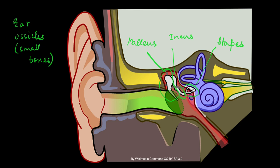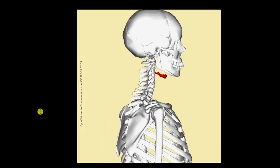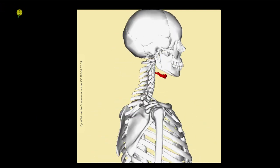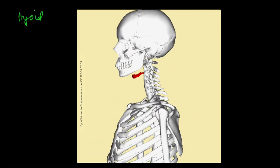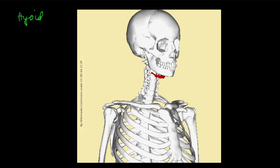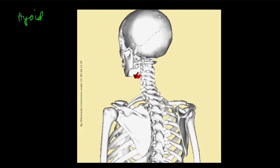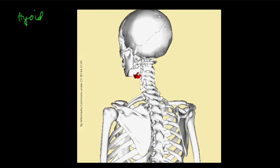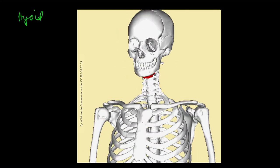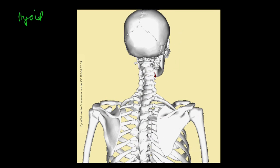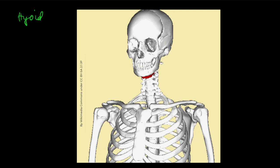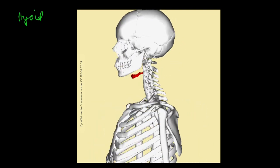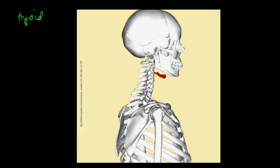The last bone we talk about in the skull is a bit unique. It is present below the jaw and in front of the throat, and it's called the hyoid. It seems to be hanging in the air — unlike other bones it's not connected to any other bone. Instead, it is connected to muscles, and it helps in the movement of the tongue and the throat. So the skull contains the cranial bones, facial bones, ear ossicles, and the hyoid.